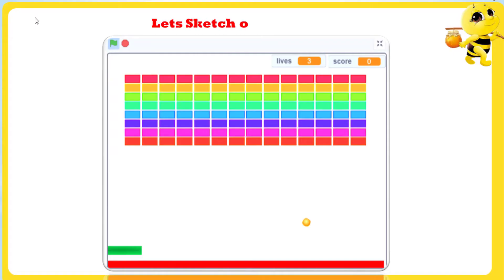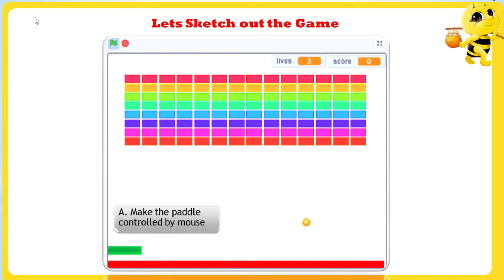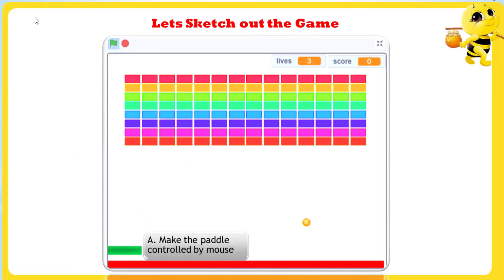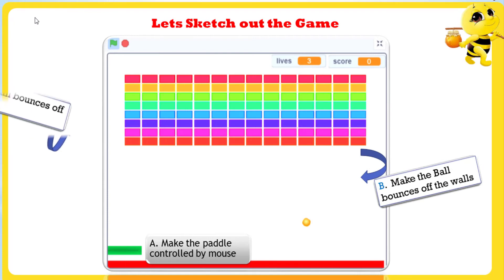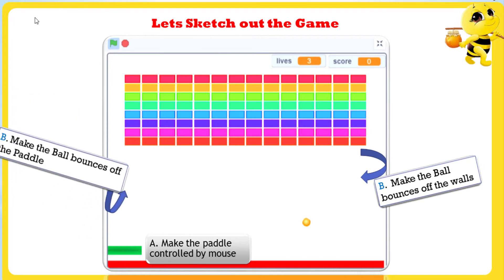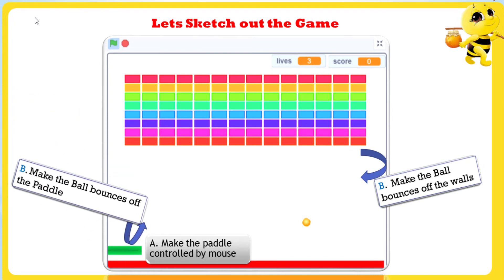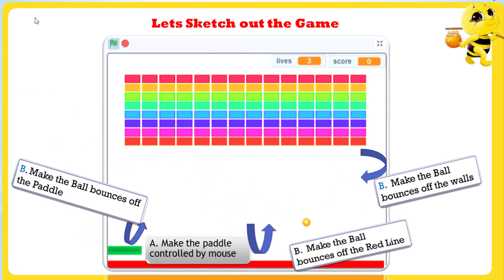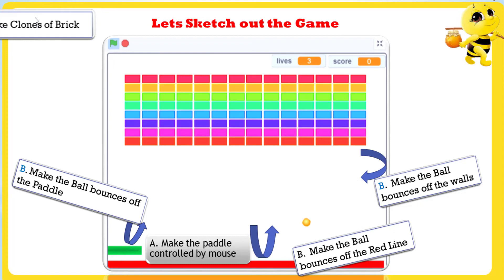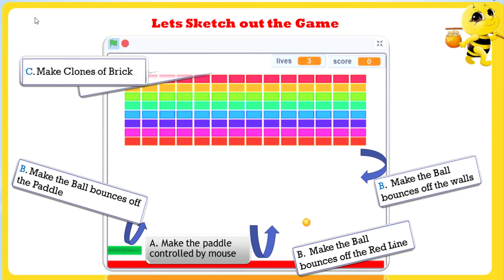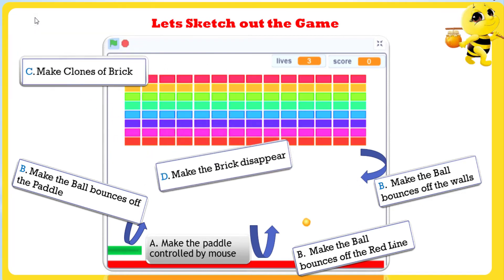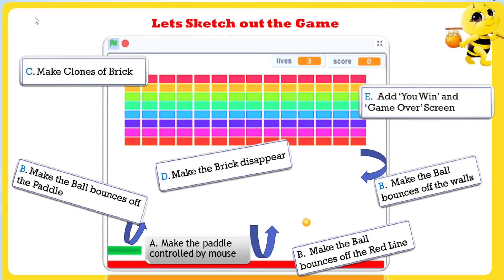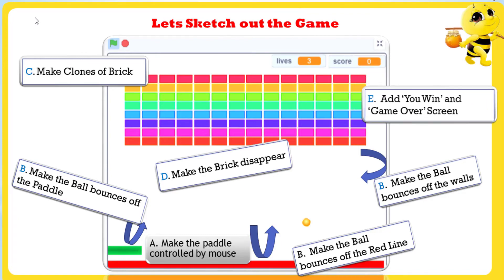Let's look at what we need to code for the brick breaker game. A: Make the paddle controlled by mouse. B: Make the ball bounce off the wall, bounce off the paddle, and bounce off the line. C: Make the clones of bricks. D: Make the brick disappear when the ball hits it.